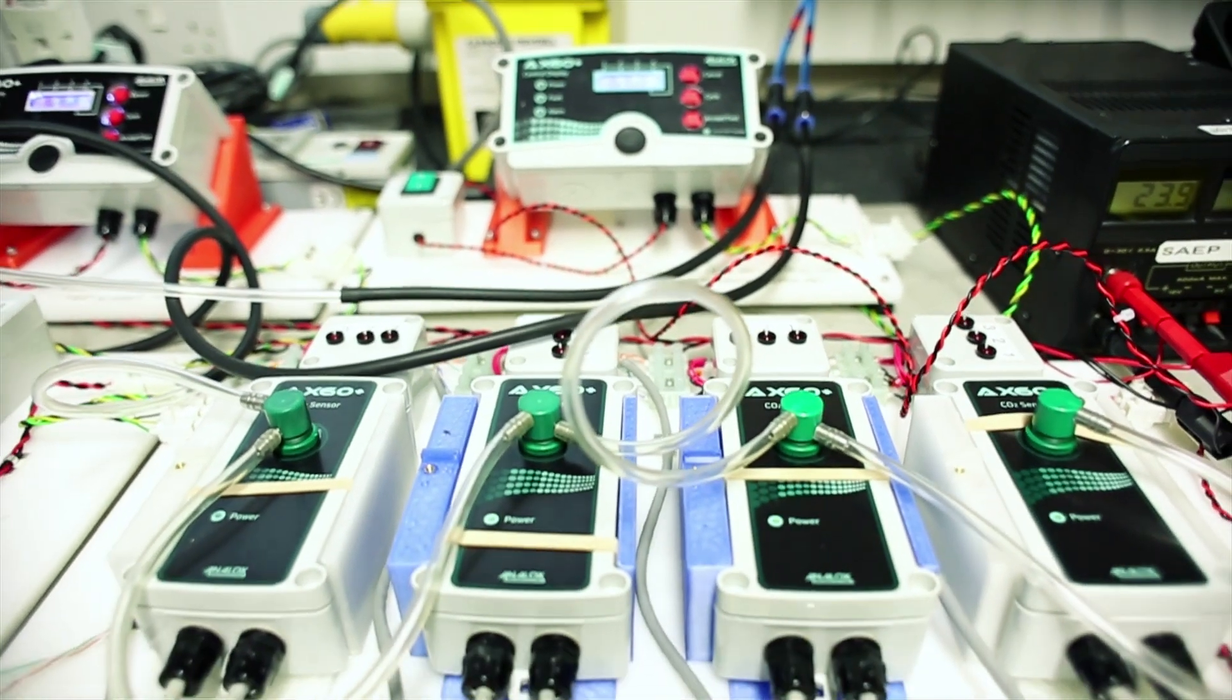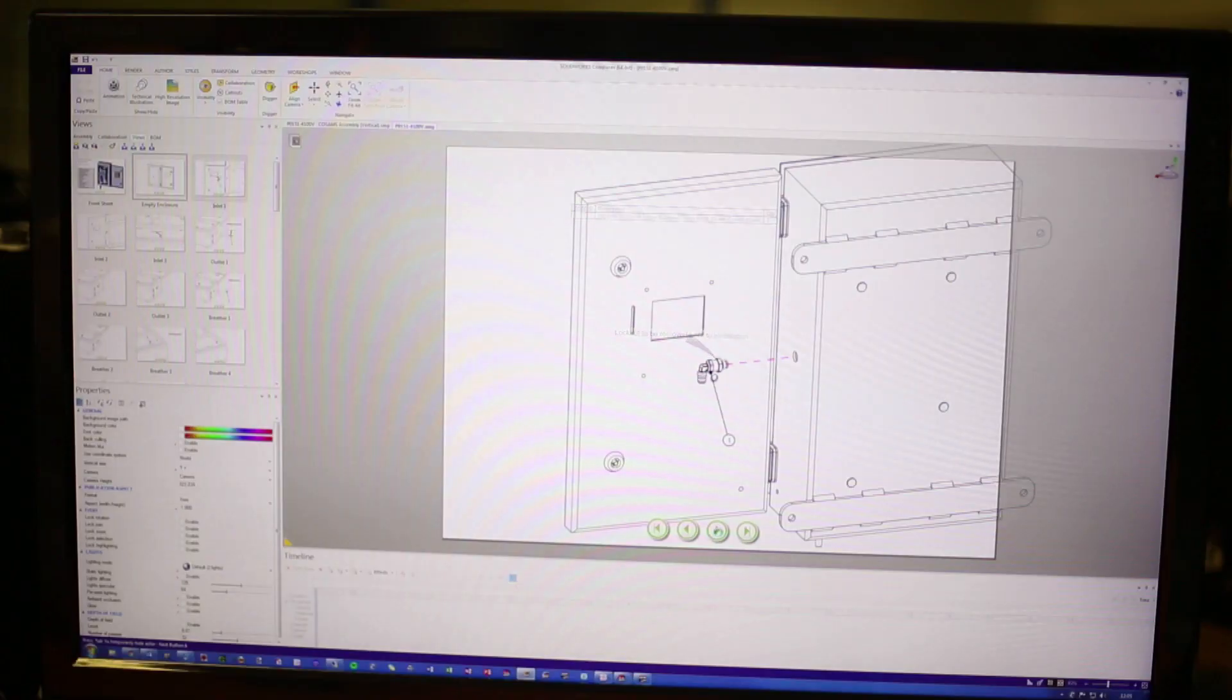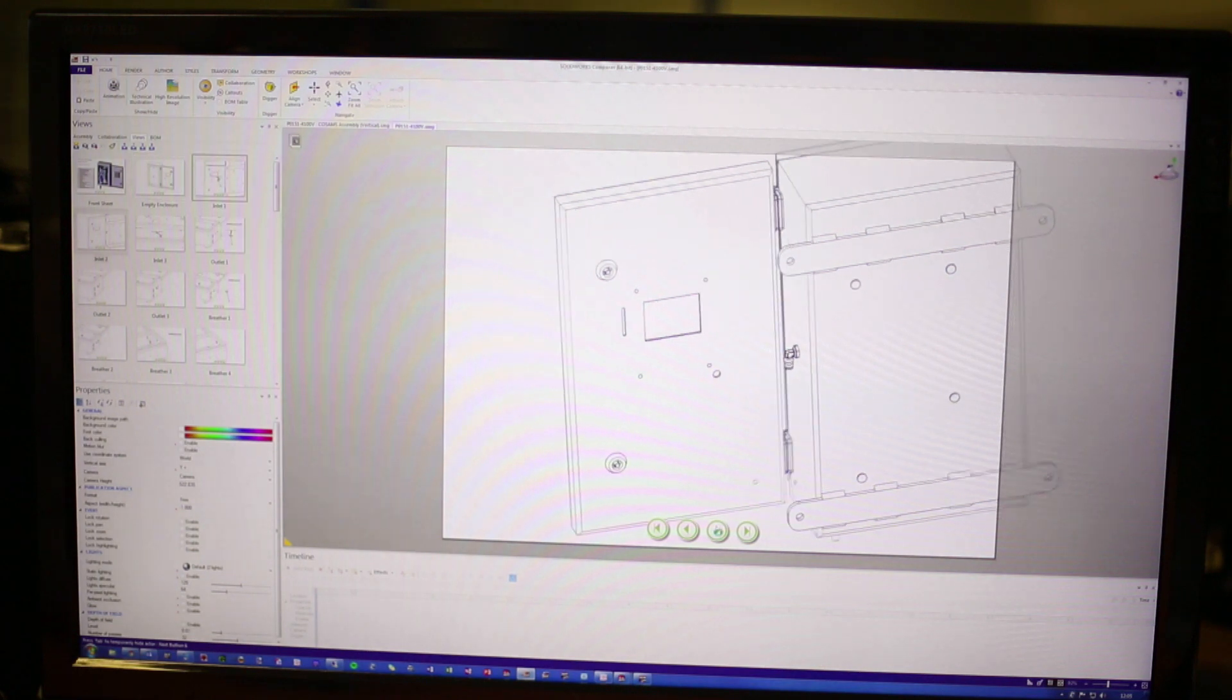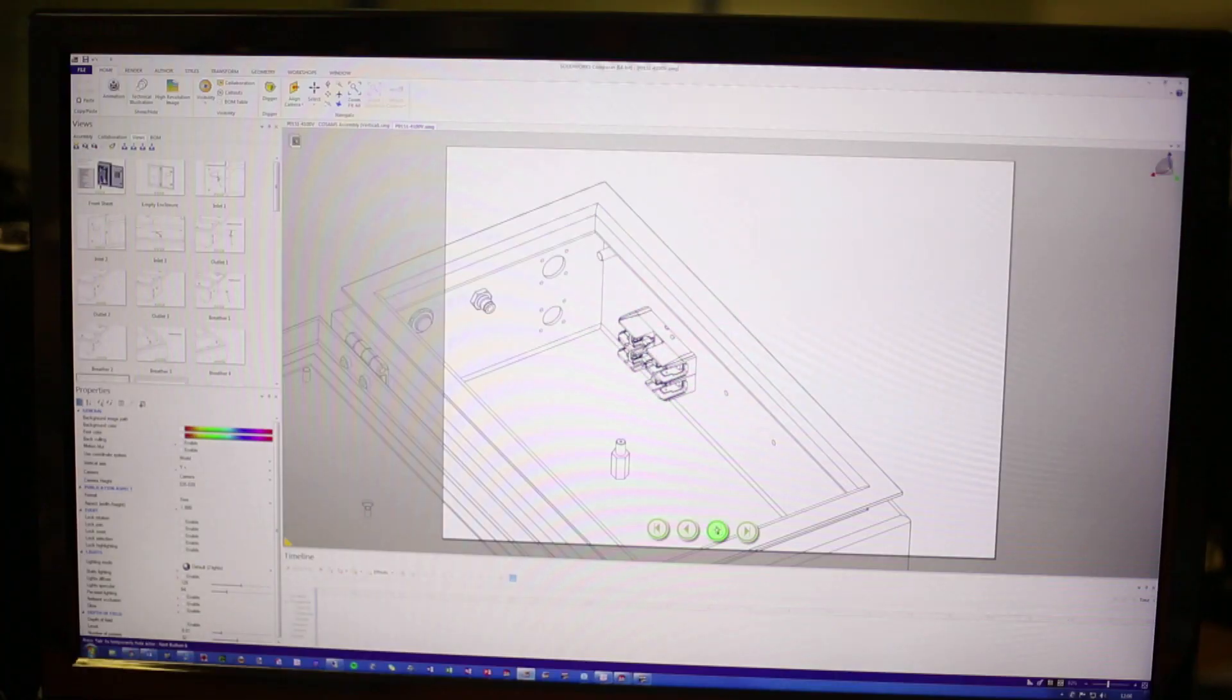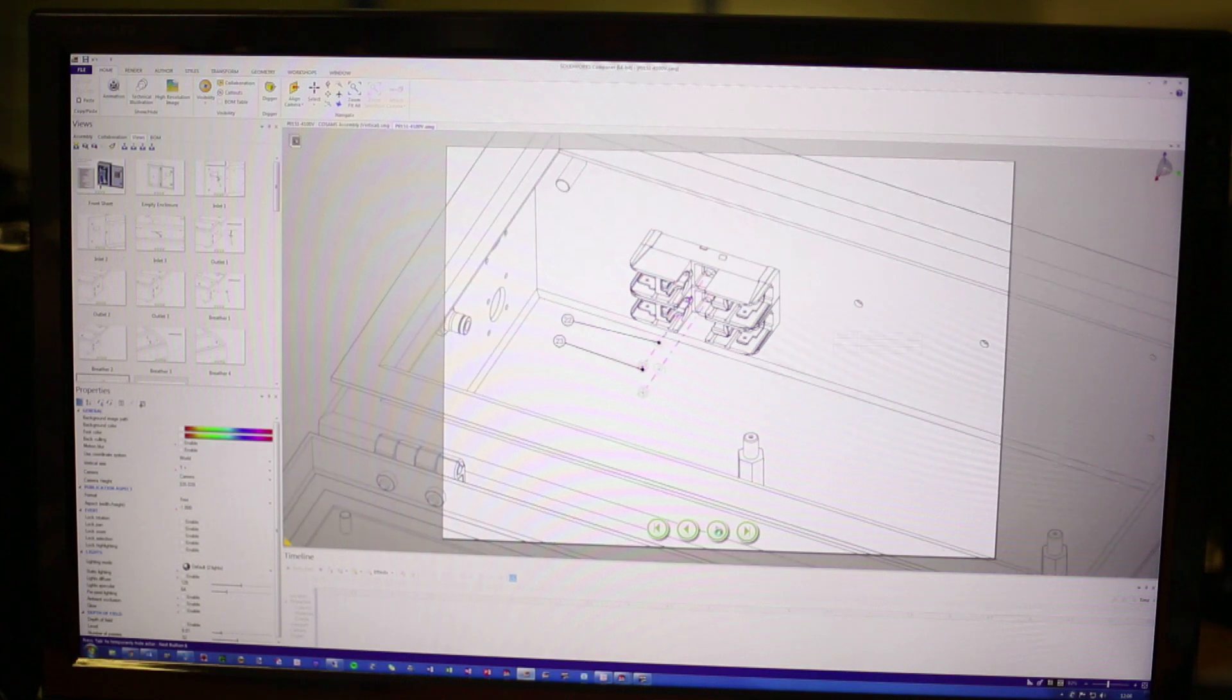You can do a build instruction using Composer basically in a couple of days. Before, you're actually having to build the product, take photos while you're building it, then write the procedure out. With Composer you just bring the 3D model in and it's a lot quicker.